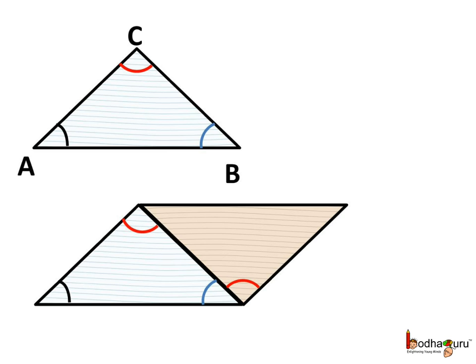Next, we turn the second triangle upside down and bring it near the first triangle such that angle B of the first triangle and angle C of the second triangle come together.